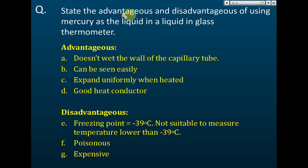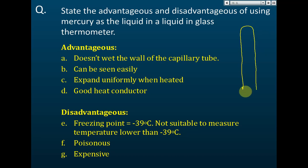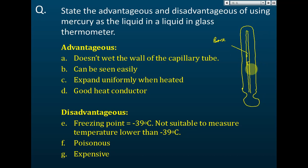You need to know the advantages and disadvantages of using mercury and alcohol in a liquid-in-glass thermometer. For mercury, one advantage is that it does not wet the wall of the capillary tube — the bore. Mercury will not cling or stick to the wall, which makes measurements more accurate. Its silvery-gray color means it can be seen easily, so readings can be taken easily.